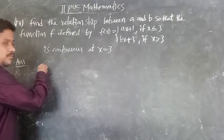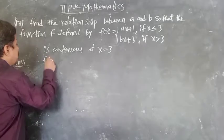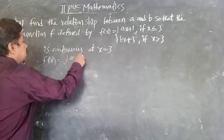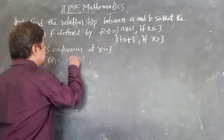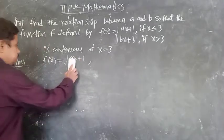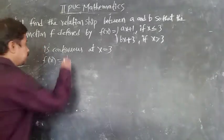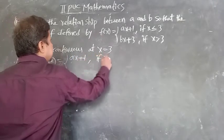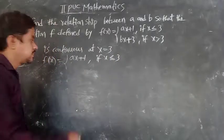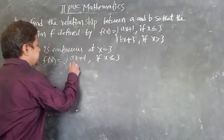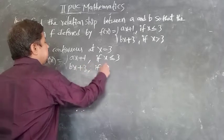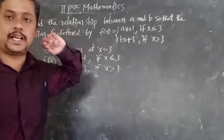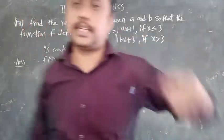So first I have to write the function f(x). f(x) = ax + 1 for x ≤ 3, and bx + 3 for x > 3. This is a continuous function.